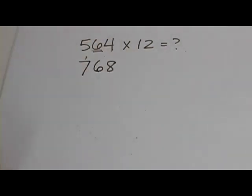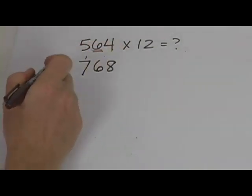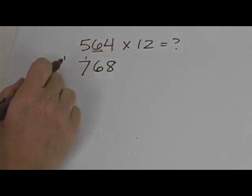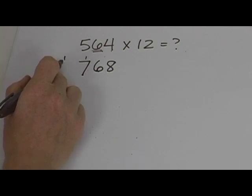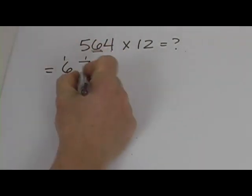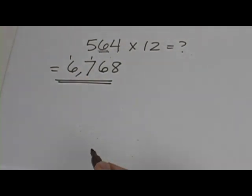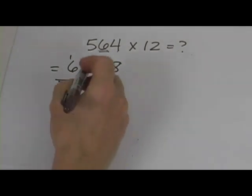So a 7 goes there. But it's 17, so I'm going to put a little 1 on top of here. So I'm going to carry that 1 to the next answer. So my answer to this problem is 6,768. You can check it with a calculator. Let's try another one.